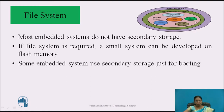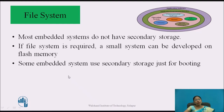Next is the file system. Embedded systems have constraints of size and must operate in real time, which limits the memory available. Most embedded systems do not have secondary storage, so the file system is optional and used only if needed. If a file system is required, a small one can be developed on flash memory. Some embedded systems use secondary storage just for booting purposes; otherwise they do not use secondary storage.